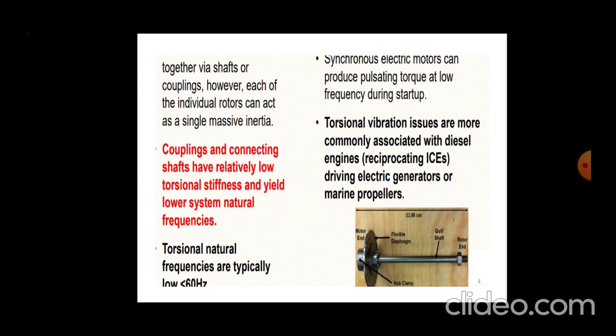Coupling and connecting shafts have relatively low torsional stiffness — leading of the coupling is done in such cases. Torsional vibration issues are more commonly associated with the diesel engine, not in petrol engines or gaseous engines. Drive electric generators are also a popular example. The torsional natural frequencies are typically low — less than 40 to 60 Hz.